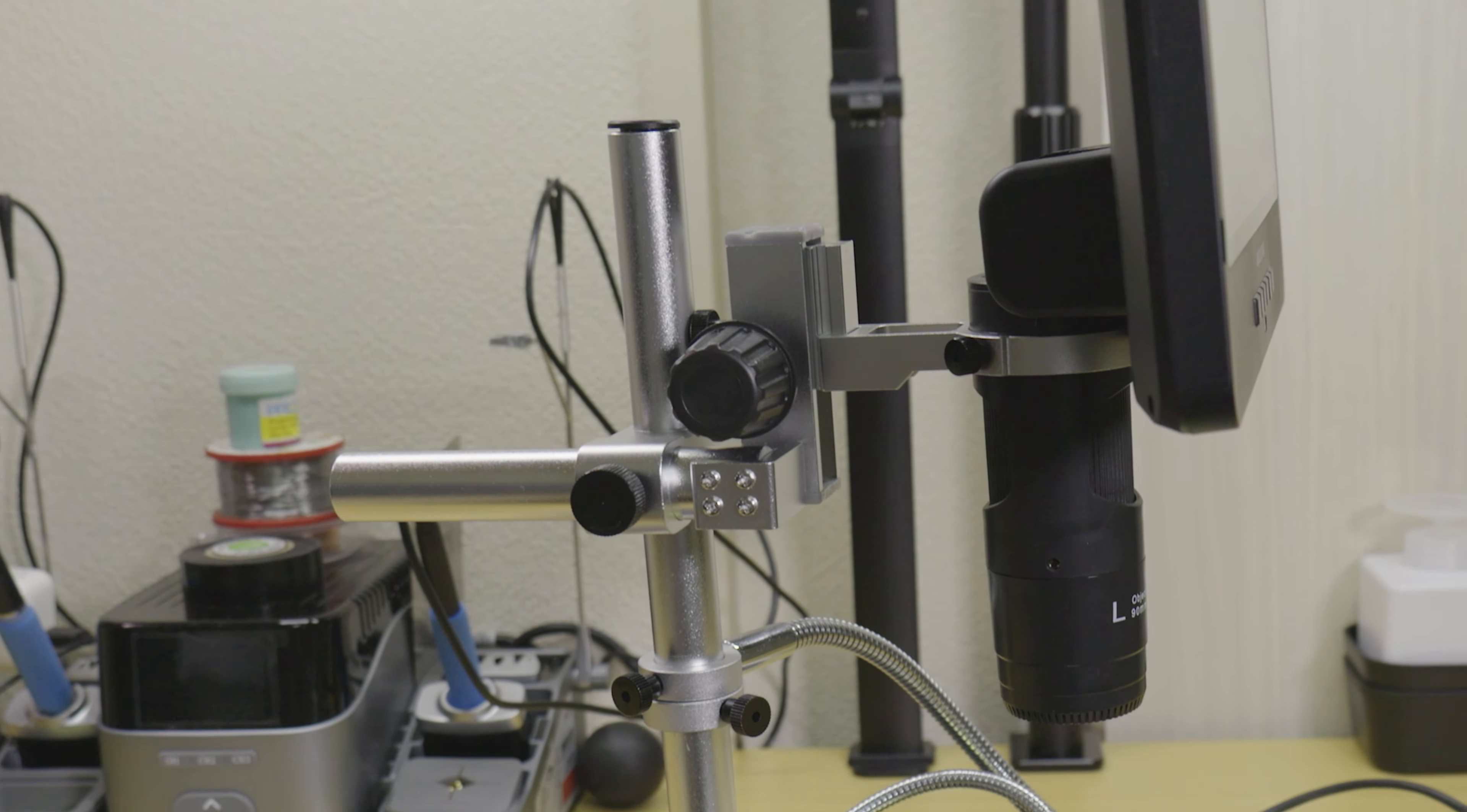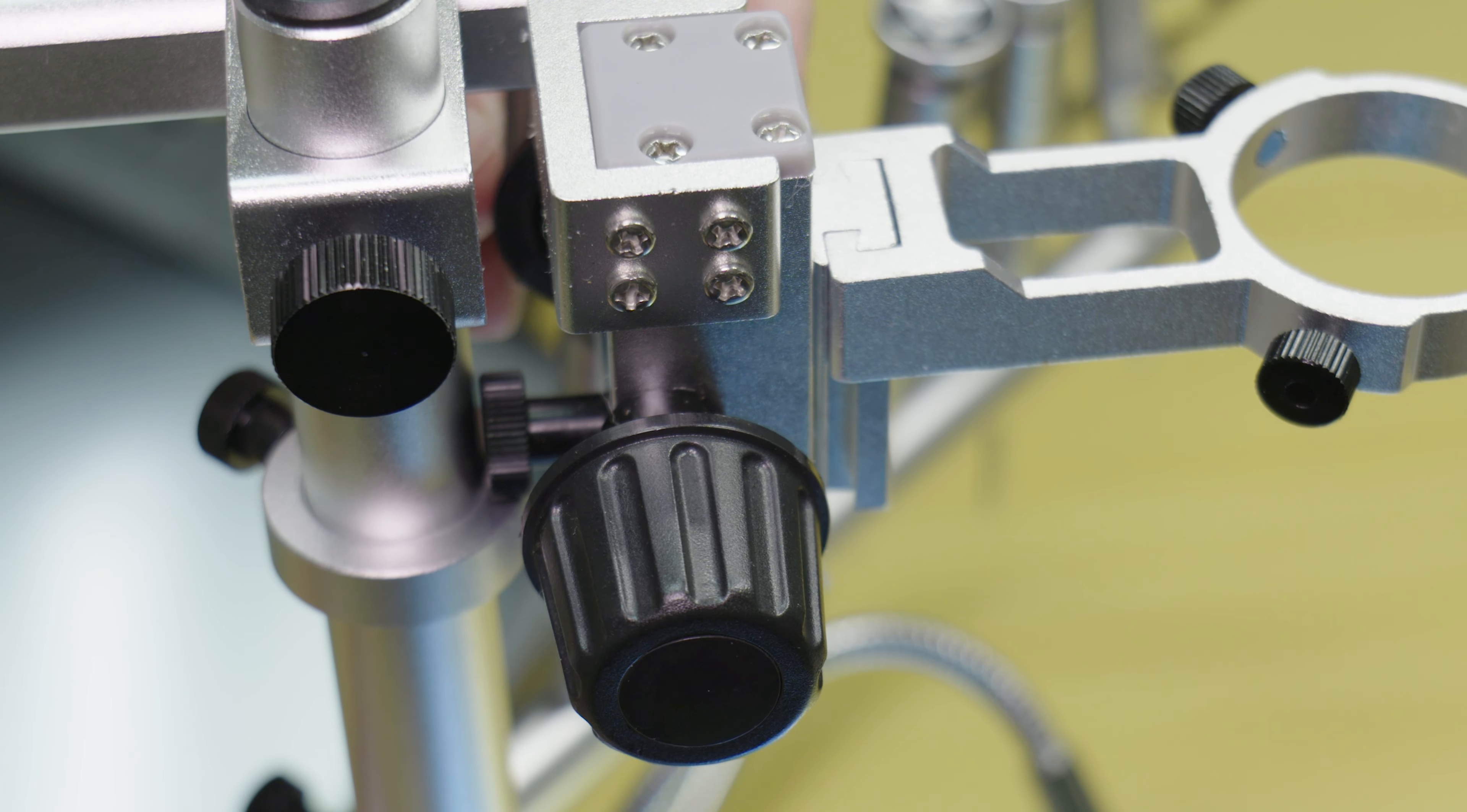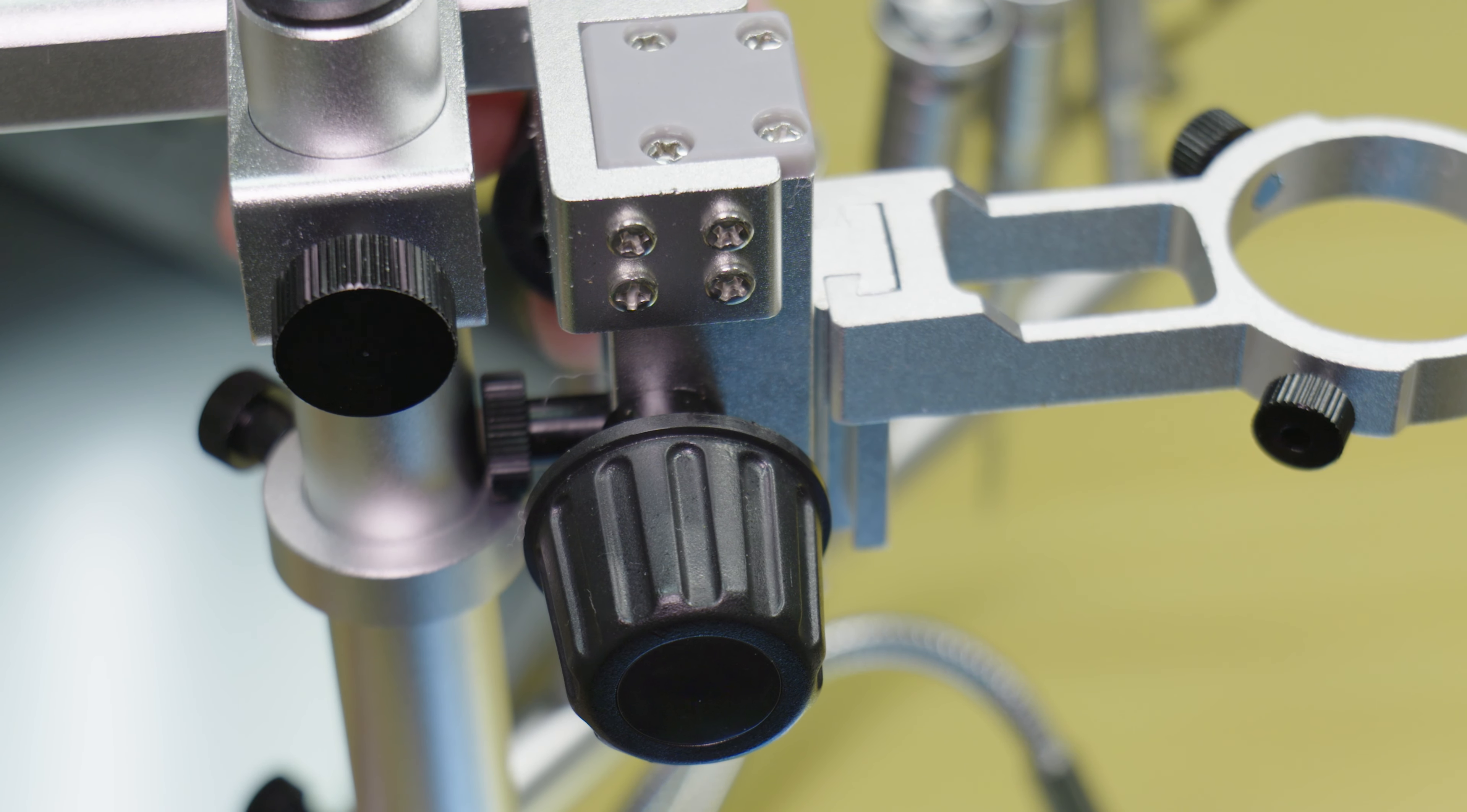Then above that we have the microscope mount. Like the pole mounted accessories, this mount is fully adjustable and also includes a smooth turn vertical adjustment with a few centimeters of travel.